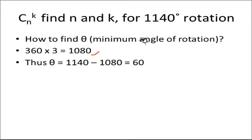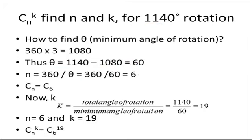So after considering 3 360s rotation you get the value of 1080. Thus theta will be total degree of rotation minus all the 360 degrees. That means 1080 you will come to the value 60 degree. So minimum angle will be 60 degree. With the help of theta you will be able to find out the value of N. That is 6.